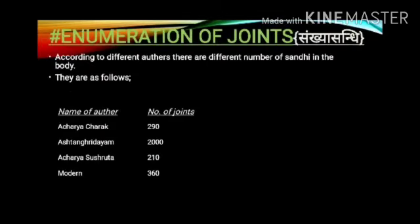Numbers of Sandhi: According to different authors, there are different numbers of joints in the body. According to Acharya Sushruta there are 290; according to Vagbhata, 2000; according to another account of Sushruta, there are 210; and according to the modern aspect, there are 360 joints.